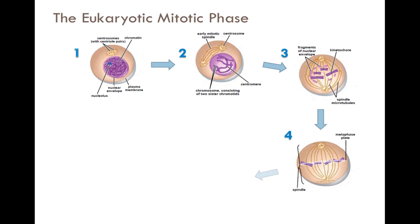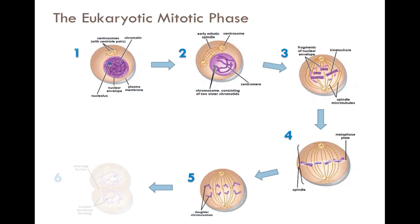Anaphase begins when the two centromeres of each chromosome come apart, separating the sister chromatids. Each sister chromatid is now considered a daughter chromosome, and microtubules attached at the kinetochores bring the daughter chromosomes to their designated pole. Telophase and cytokinesis begins when two identical nuclei are formed for each cell and the nuclear envelope starts to form. What follows is the separation of the two daughter cells, known as the cleavage furrow.